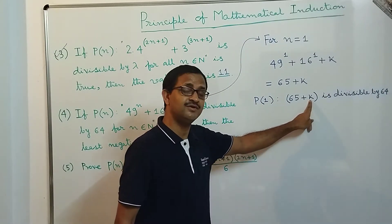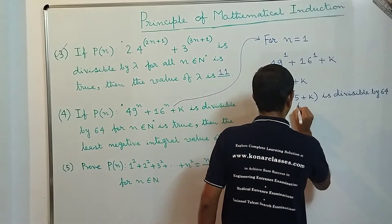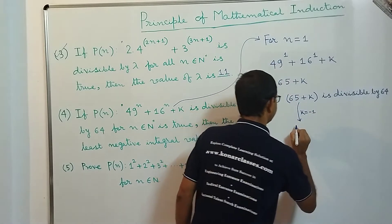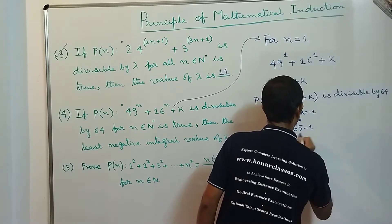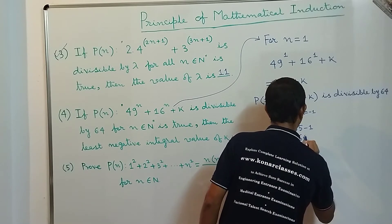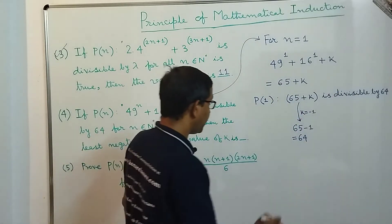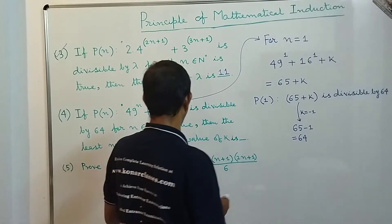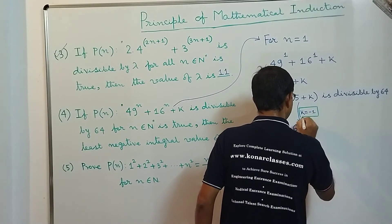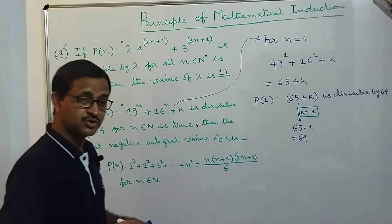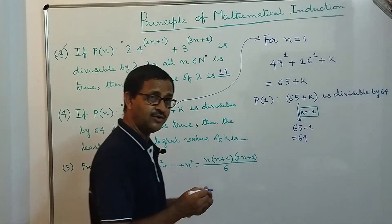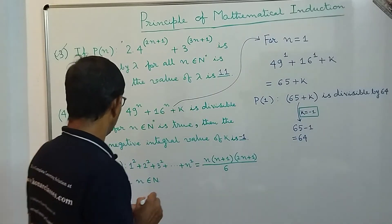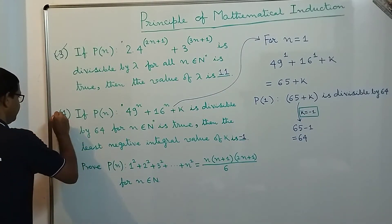This is possible when k = −1, because 65 + (−1) = 64, and 64 is clearly divisible by 64. So k = −1 is the least negative integral value of k. We are done with question 4.